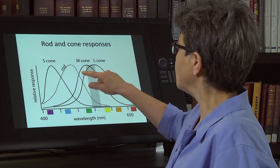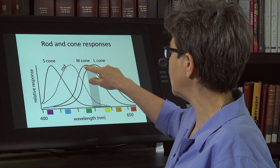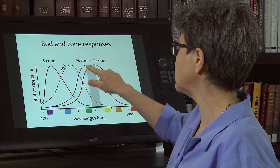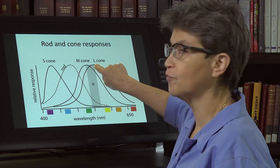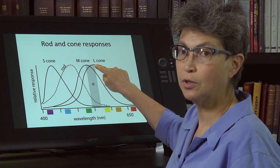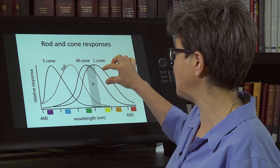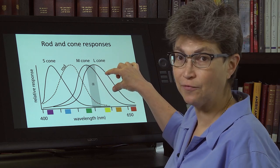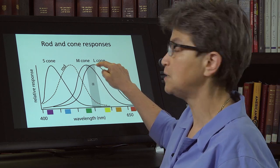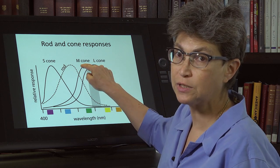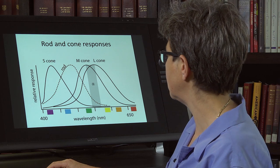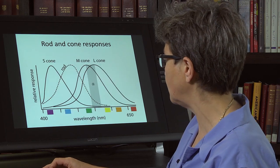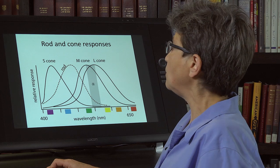As a result, what you see is that sometimes this M cone will be shifted over towards the L cone. It'll have a big stretch of amino acids that actually come from the L cone. And sometimes the L cone will be shifted over towards the M cone. What are going to be the consequences of that?